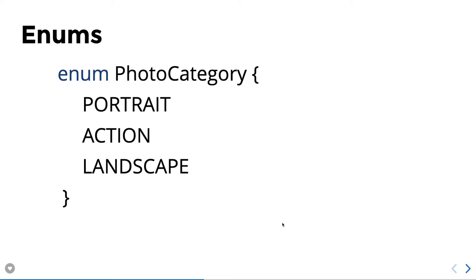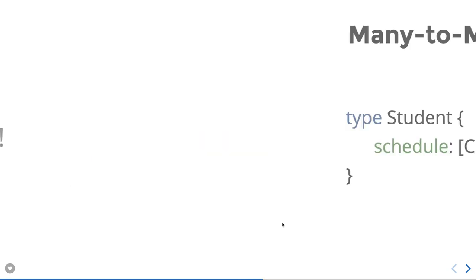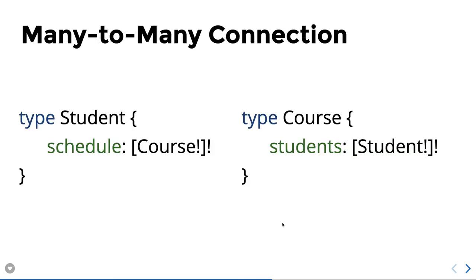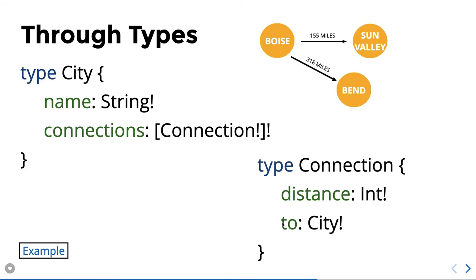For example, Photo has a postedBy User, and User has postedPhotos returning an array — this represents a one-to-many or many-to-many type relationship. It's not a database relationship, just a type relationship. Another example: a City type has a name and connections, and Connection has a distance integer. Similarly, User can have a nested Address type with street name, house number, state, city, and country.